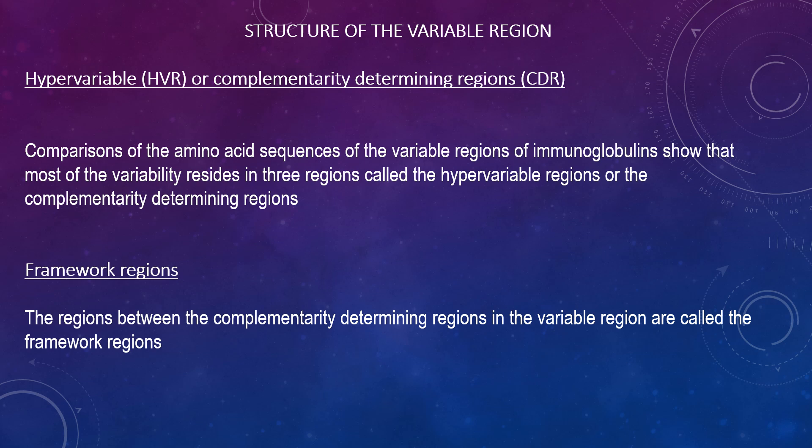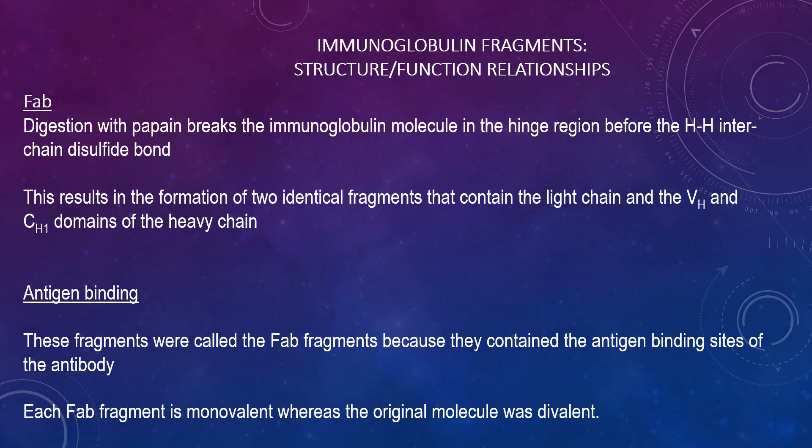Based on similarities and differences in framework regions, the heavy and light chain variable regions can be divided into groups and subgroups, representing the products of different variable region genes. Digestion with pepsin breaks the immunoglobulin molecule in the hinge region before the H-H inter-chain disulfide bond, resulting in the formation of two identical fragments that contain the light chain and the VH and CH1 domains of the heavy chain. These fragments were called Fab fragments because they contained the antigen binding sites of the antibody. Each Fab fragment is monovalent, whereas the original molecule is divalent.